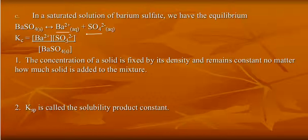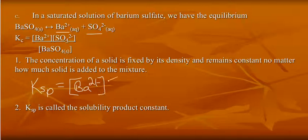We can write a K expression for this reaction. The concentration of a solid is fixed. The concentration of a solid does not change, and so we're going to get rid of the solid and call this Ksp, which is simply the product of the ions, barium times sulfate.